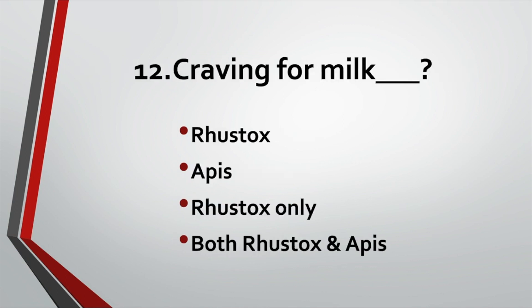Craving for milk: Option A: Rhus tox. Option B: Apis. Option C: Rhus tox only. Option D: Both Rhus tox and Apis. Answer: Option D, Both Rhus tox and Apis.